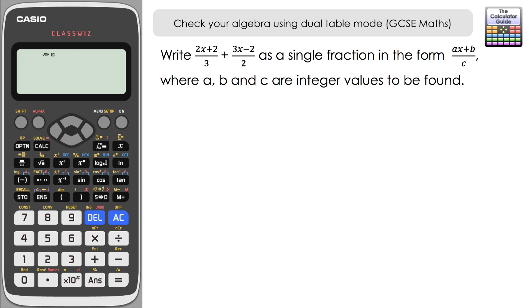We're going to focus on two GCSE-style examples. The first one: write (2x+2)/3 + (3x-2)/2 as a single fraction in the form (ax+b)/c, where a, b, and c are integer values to be found. It's important to emphasize that the algebraic manipulation won't be done by the calculator — you have to do that yourself. We're going to use the calculator to verify our results and check how confident we can be that we've got the correct answer.